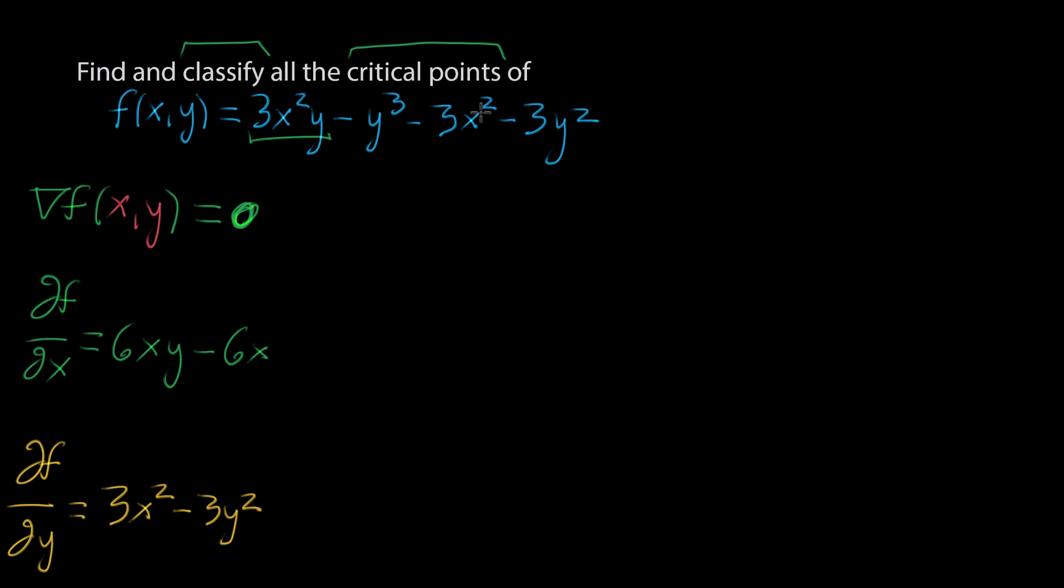Minus 3y², and then this next term only has an x, so it looks like a constant as far as y is concerned. And then this last term, we take down the two because we're differentiating y², and you'll get negative 6y.